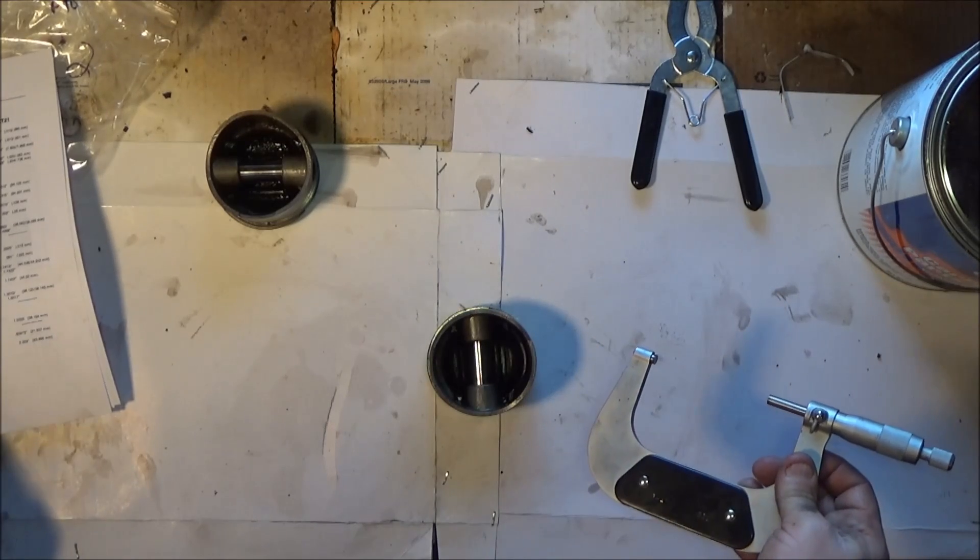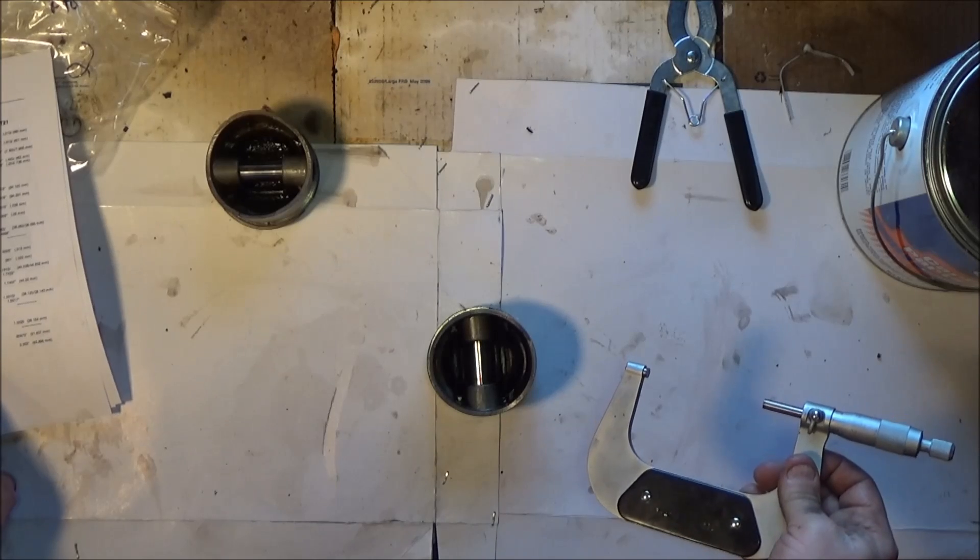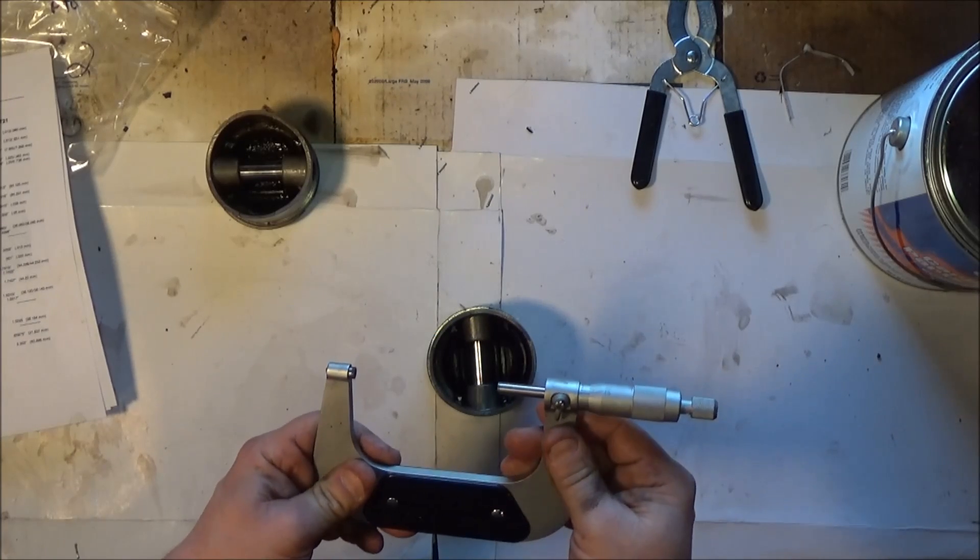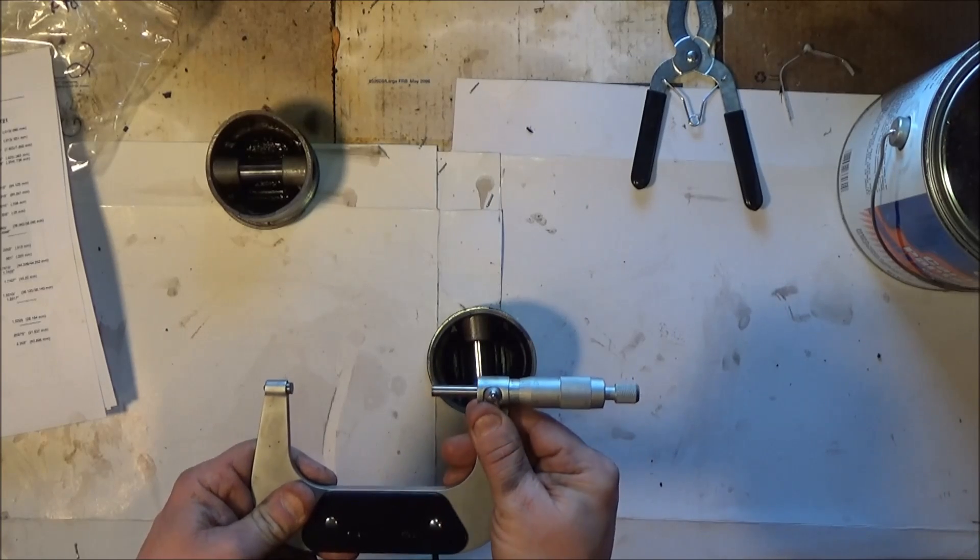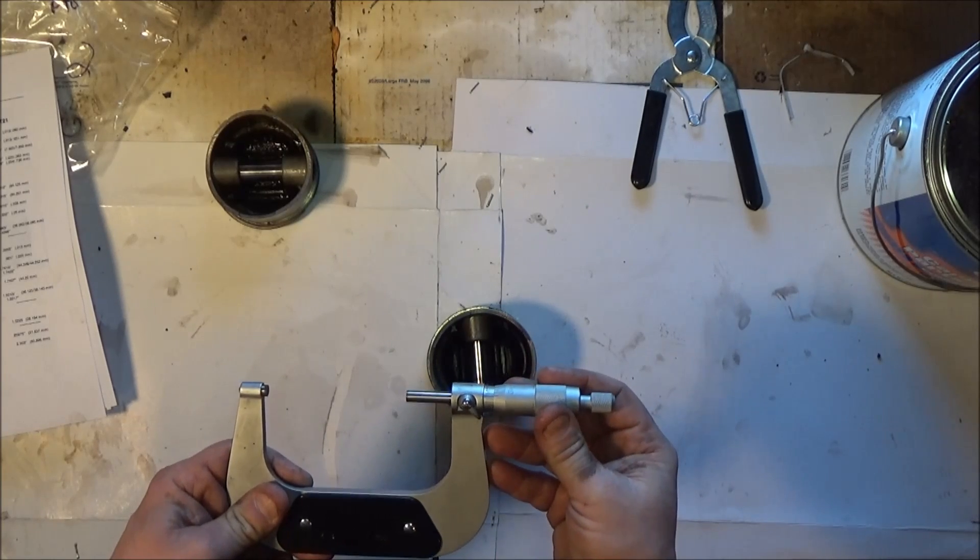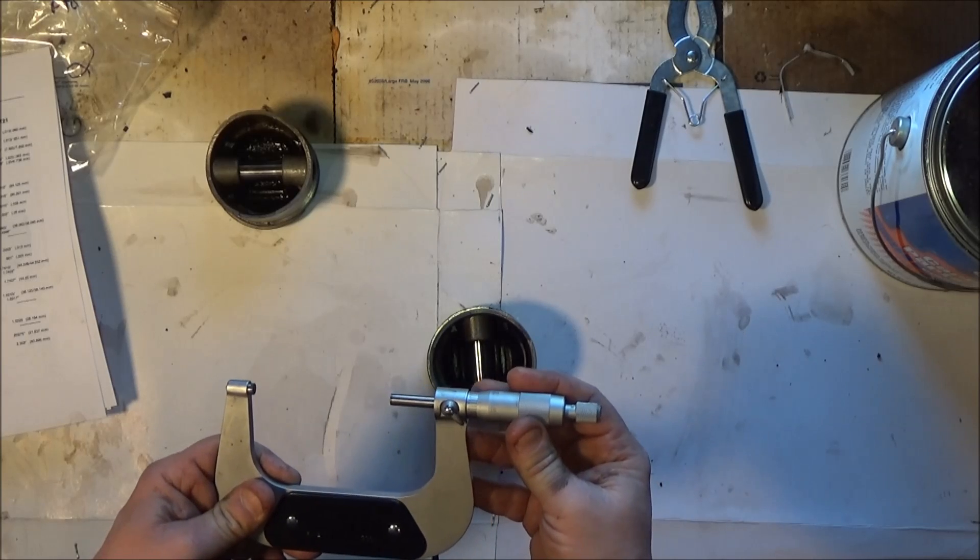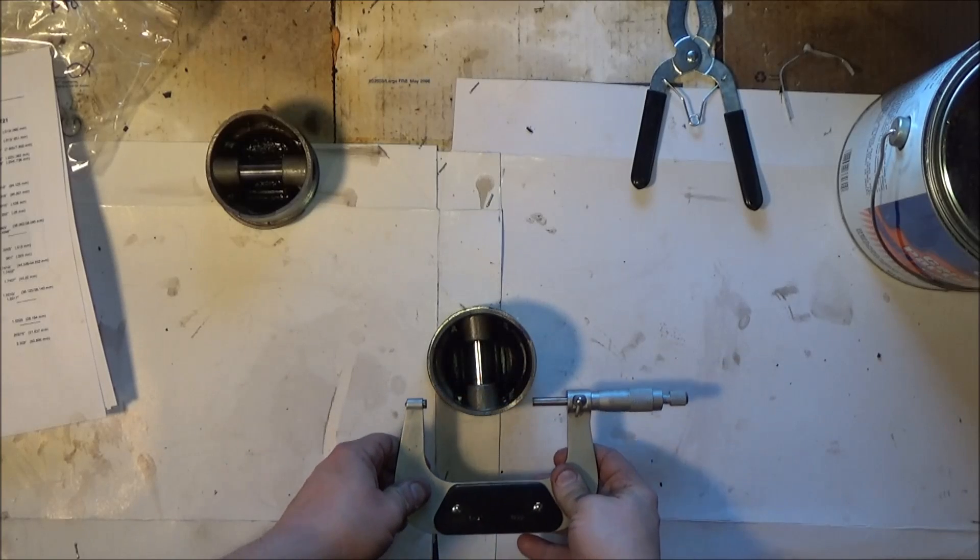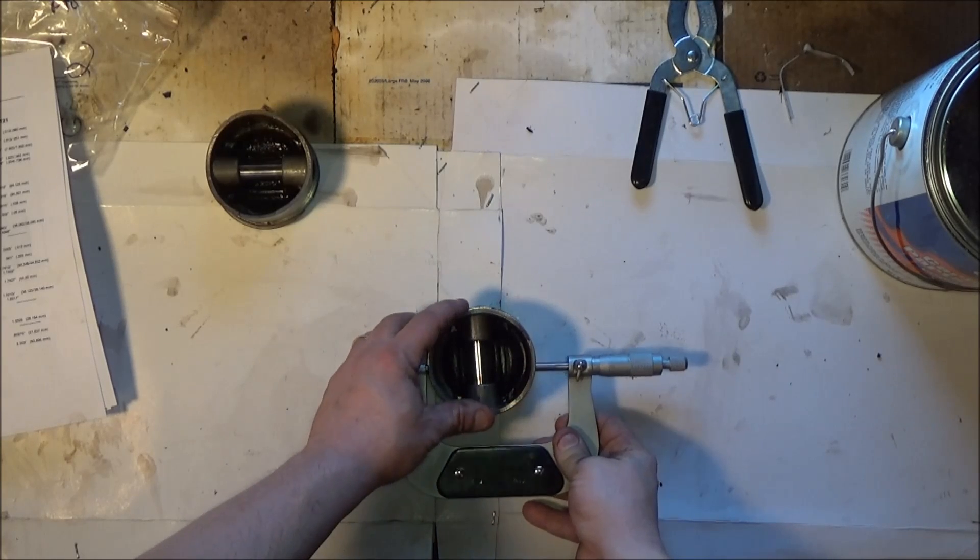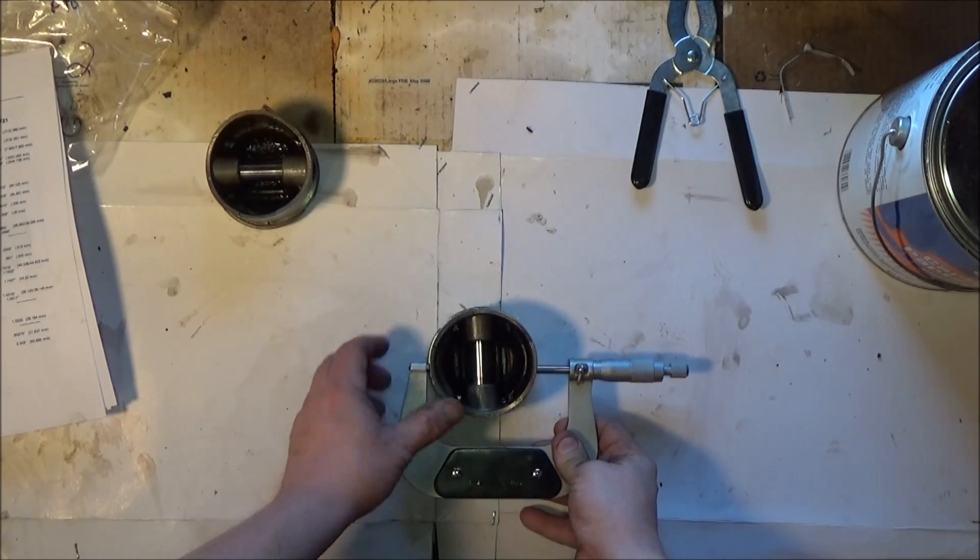Three point one one six five is the minimum, so you can set your mic up to three point one one six right there and use that like a go no-go gauge.